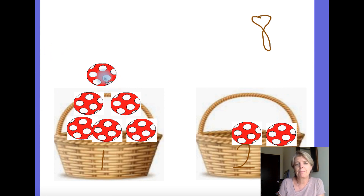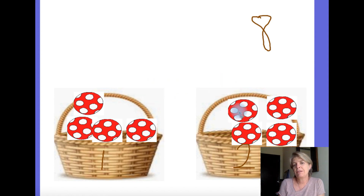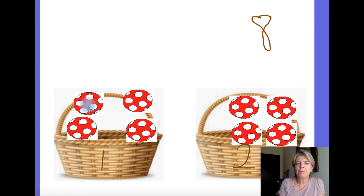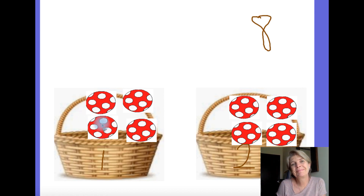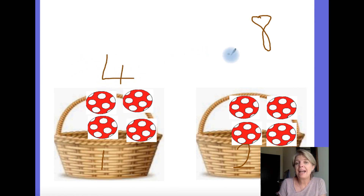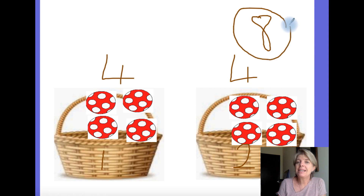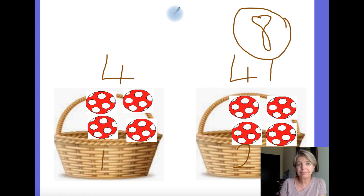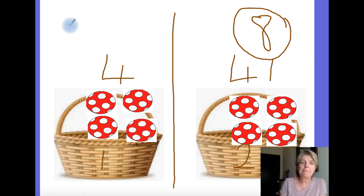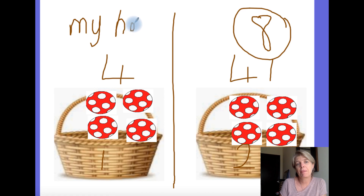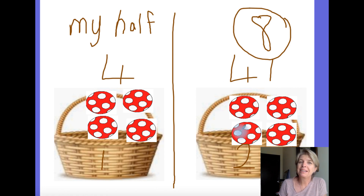So let me fix this. If I put this one over here, and this one over here, how many balls do we have each now? That's right, we have four. Four for me and four for you. So I know that half of eight is four. Half of eight is four. This is my half — I get four. This is your half and you get four. That's fair.